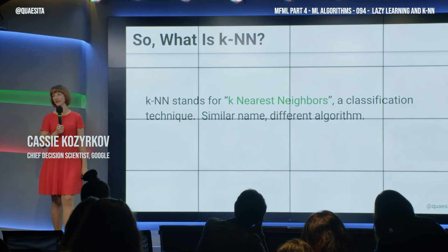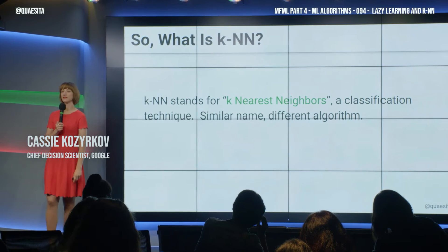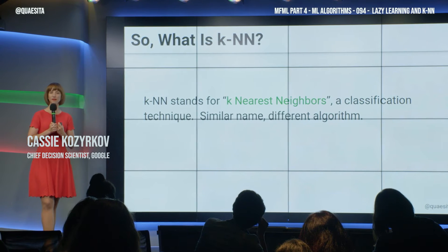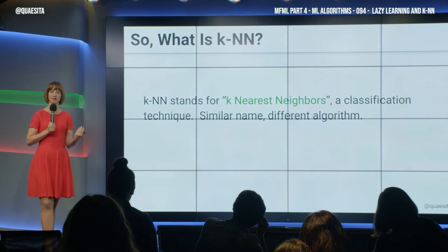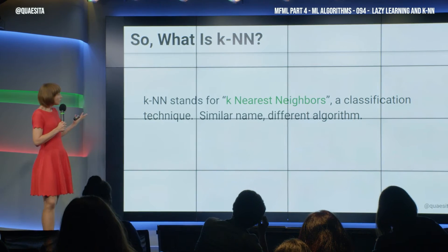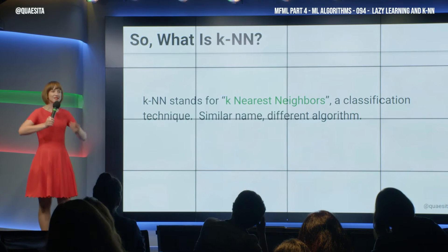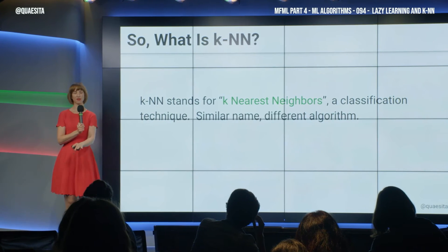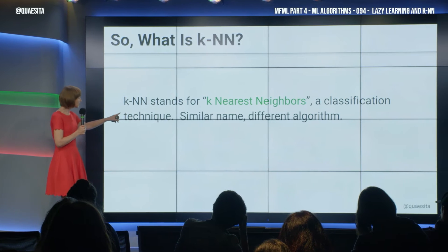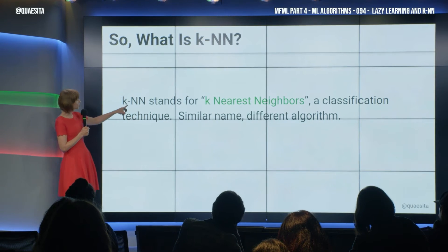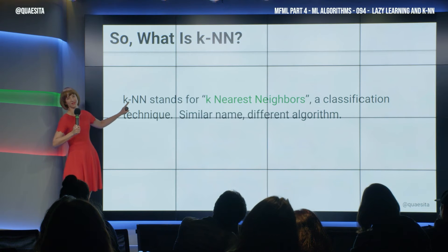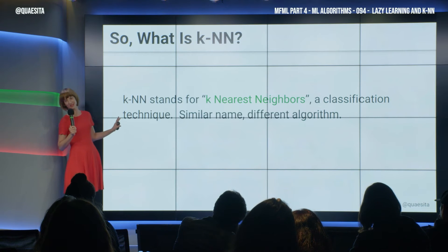Strangely, I can never understand this — students get KNN and K-means confused. I don't know why they do this, because these techniques have nothing in common. Except that maybe if you just squint just right, these two N's together look like an M. That is about it. That is all these techniques have in common.